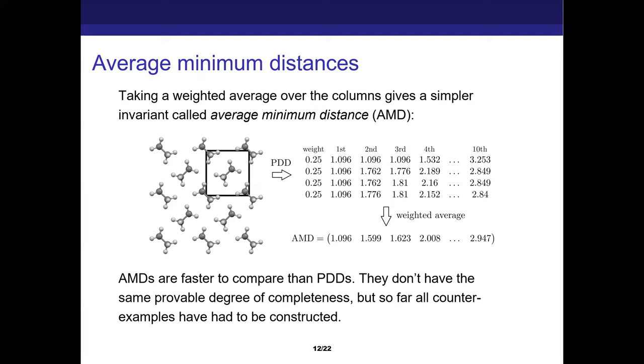We take this matrix and take a weighted average, and we end up with a vector called the AMD. The matrix is called pointwise distance distribution. This is called average minimum distance. When we take this average, we lose some information. The matrix here is quite descriptively rich, and taking the average does lose some information, but you get a lot of benefit in that it's a vector and easier to compare and faster and cheaper to store. It's just smaller.